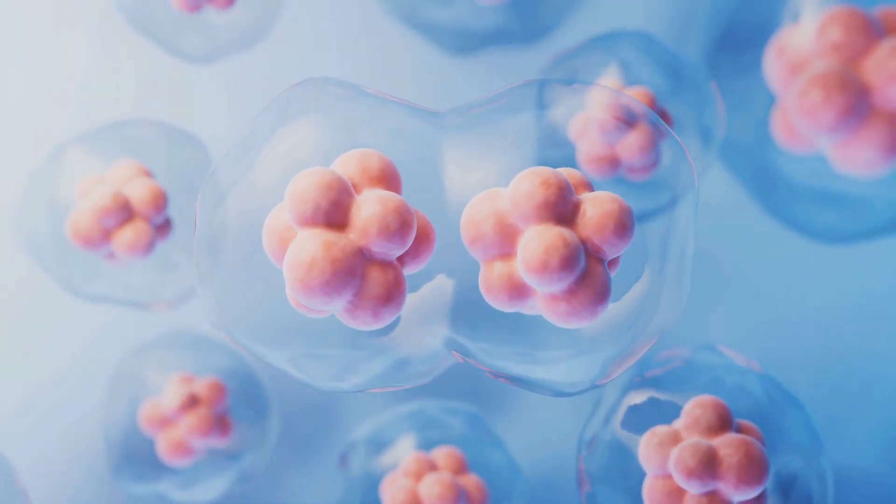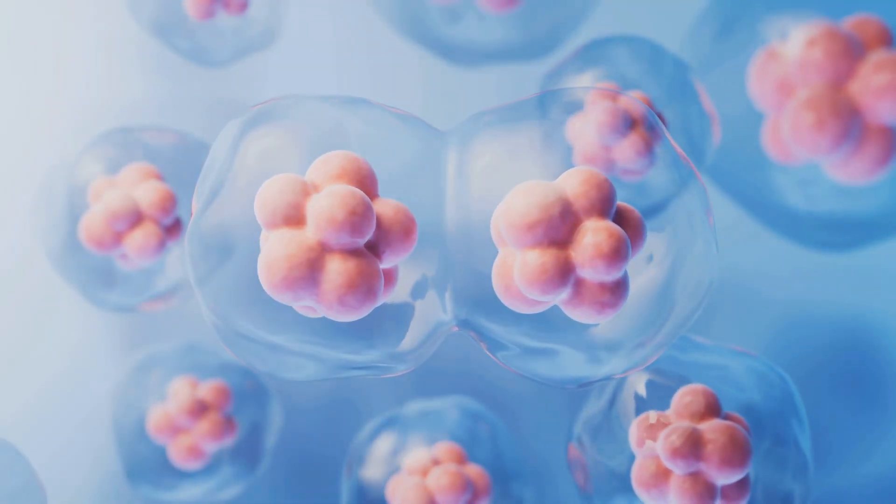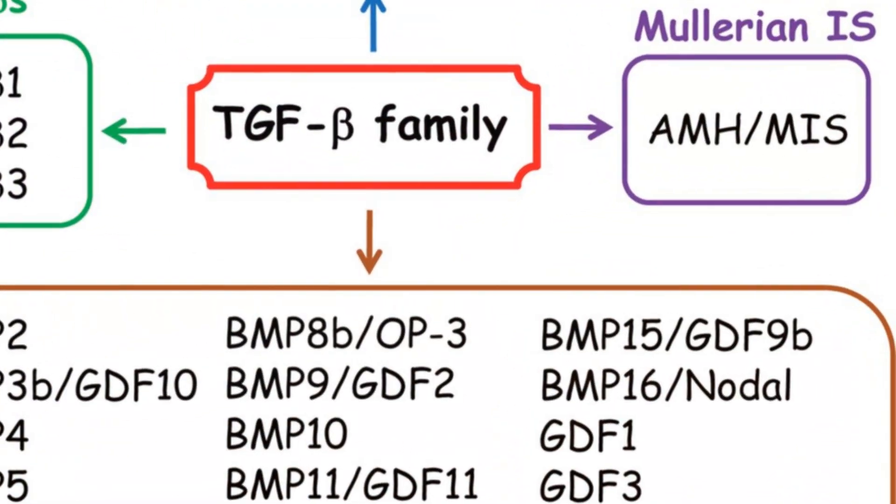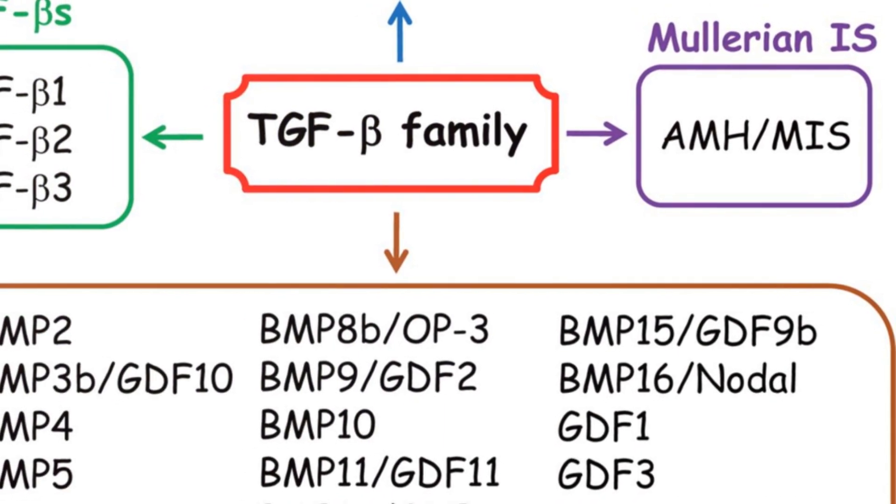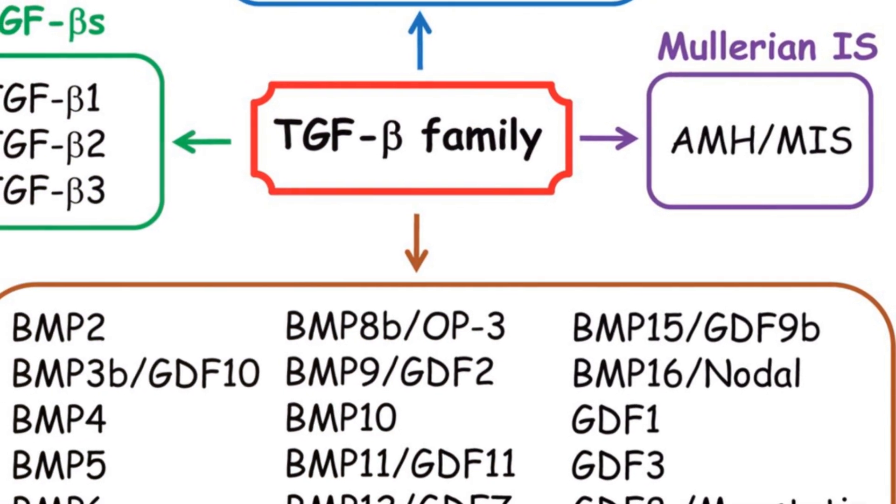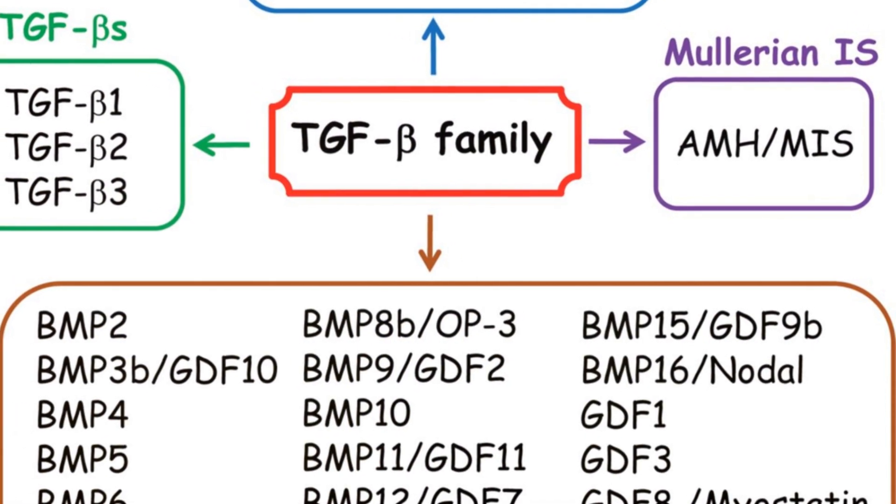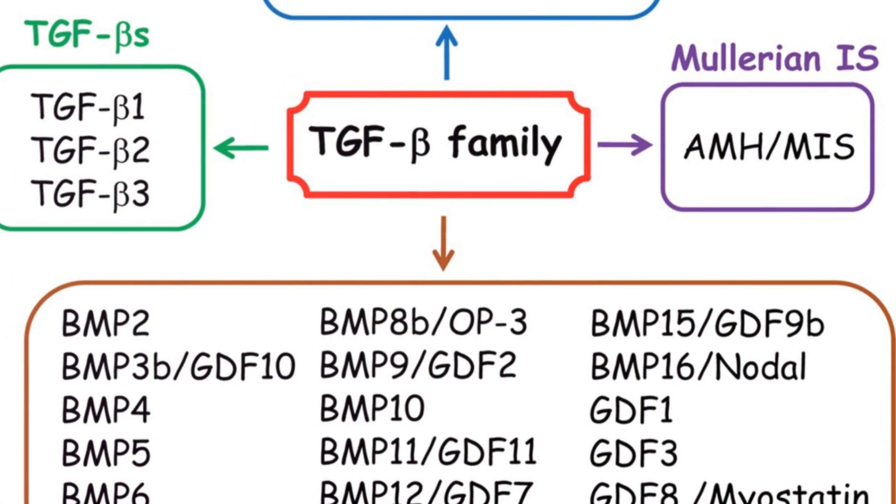Discovered in the 1980s, TGF-β3 is one of three isoforms in the TGF-beta family, which includes TGF-β1 and TGF-β2. Despite their structural similarities, each isoform has distinct roles and expression patterns within the body.